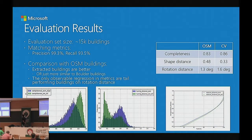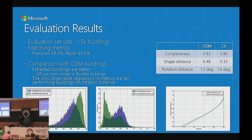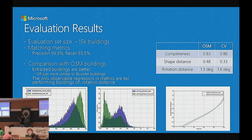Here are some evaluation results of our extraction on our evaluation set of 15,000 buildings. Our matching metric precision is above 99%, so less than 1% of our building predictions occur where there is actually no building. Looking at quality metrics — completeness, shape distance, and rotation distance — one interesting finding is that our extracted buildings generally have better metrics than OSM. Metrics don't lie, but you must remember that our labels are Boulder buildings labeled by humans, and OSM is also labeled by humans, so our labels are not perfect either.